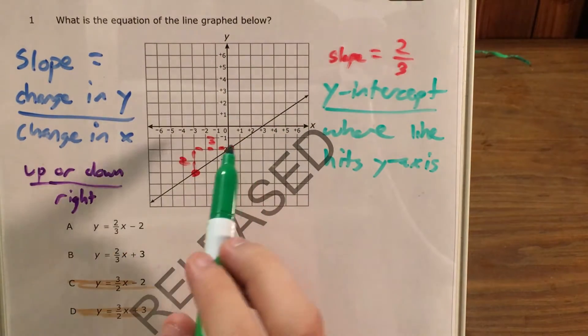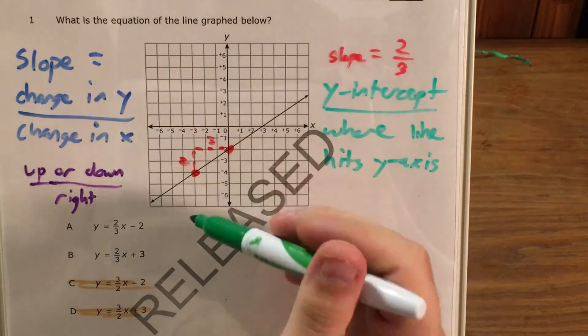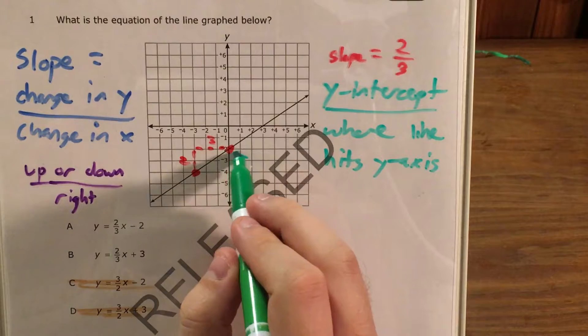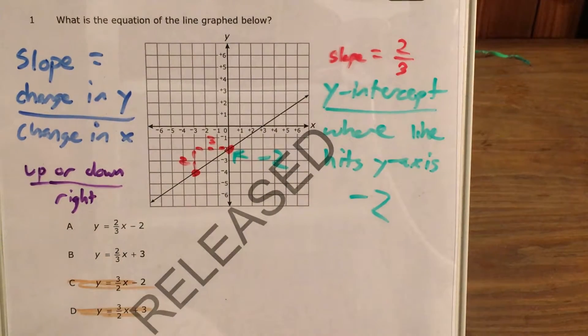And where is that line hitting it? Well, I actually already found this point here, which is where this line hits the y-axis, and it hits it at negative two. So my y-intercept is negative two.